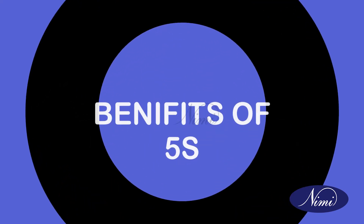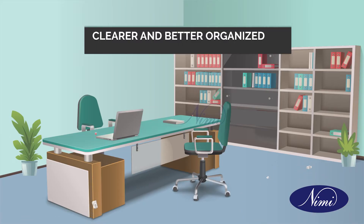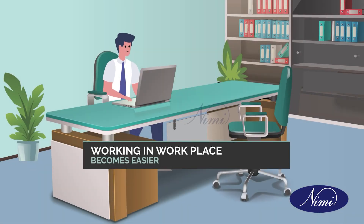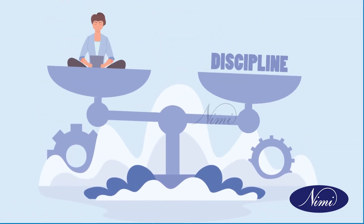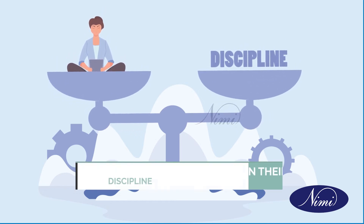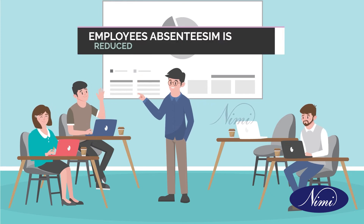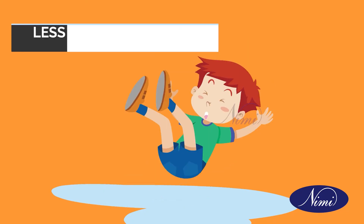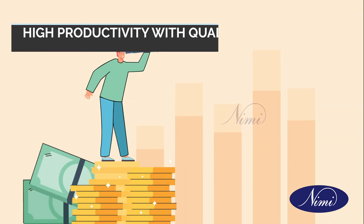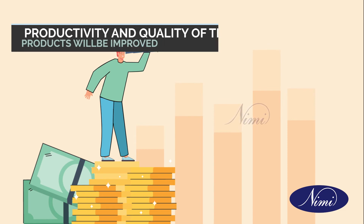The benefits of 5S are: the workplace becomes cleaner and better organized; working in the workplace becomes easier; reduction in cost is improved; people tend to be more disciplined as employees maintain discipline; delay in production is avoided; employee absenteeism is reduced; better use of floor space; fewer accidents; and high productivity with quality.